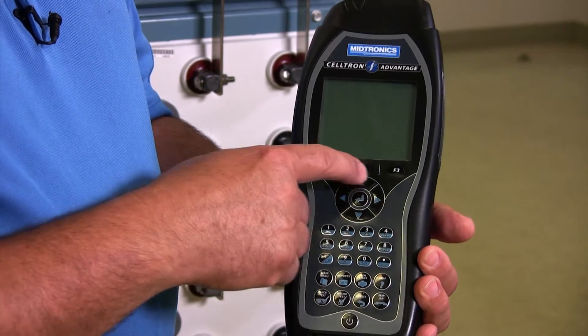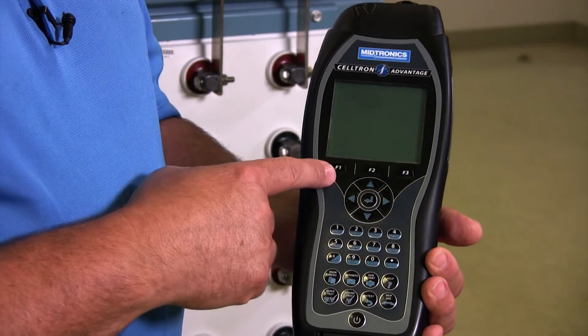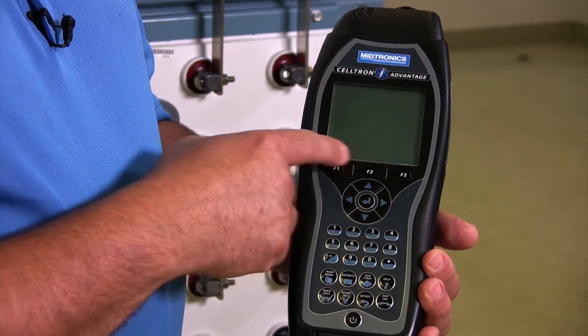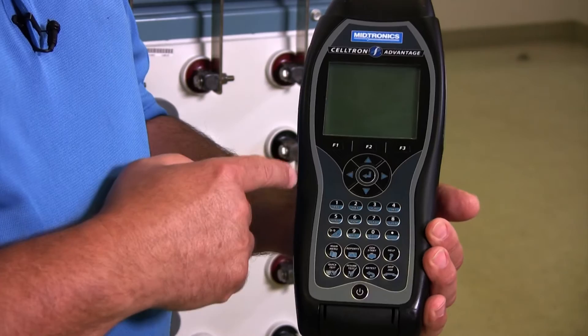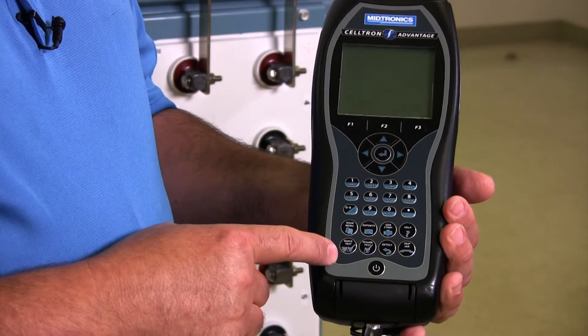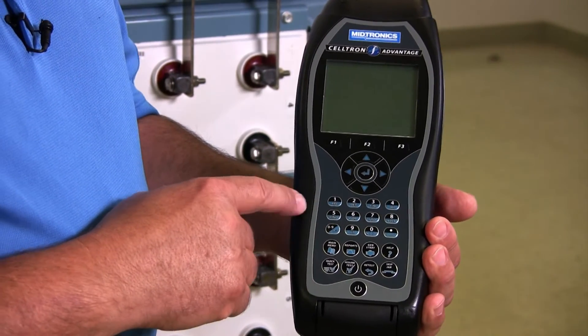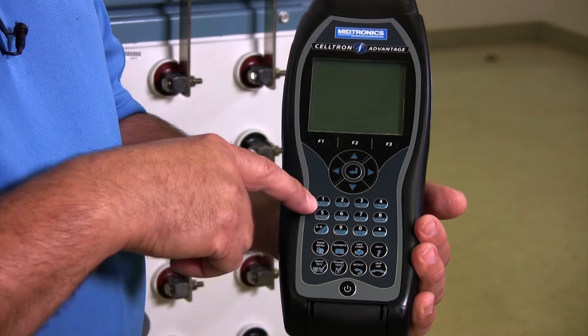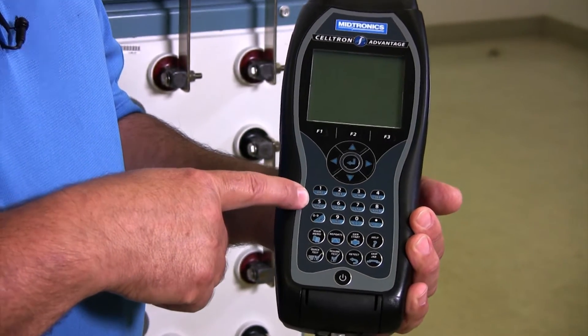You have some keys up here, function keys that work with some of the soft keys that'll come up on here. Then you have your main keypad down here where you're going to be entering data into the tester, entering names.